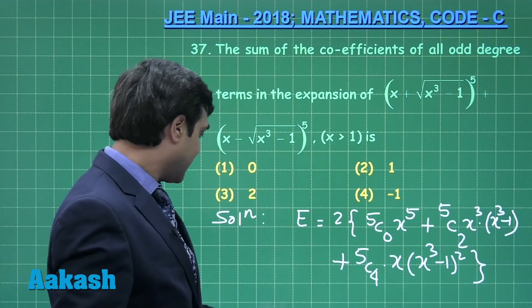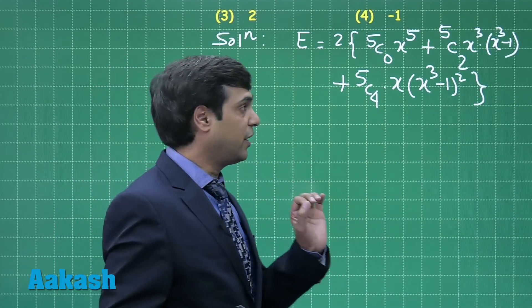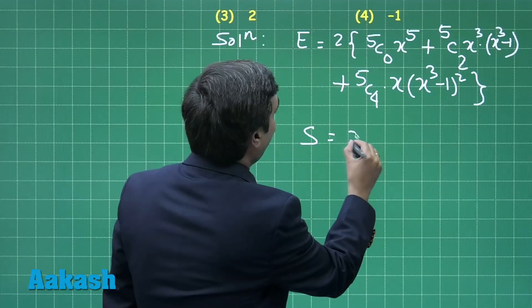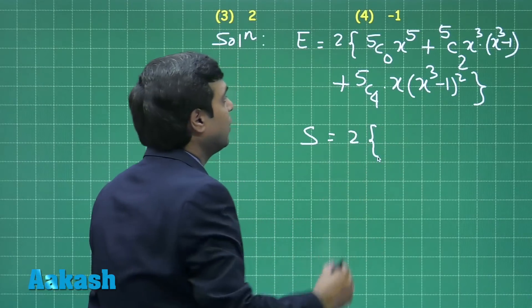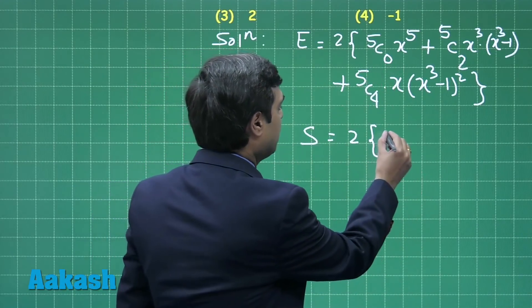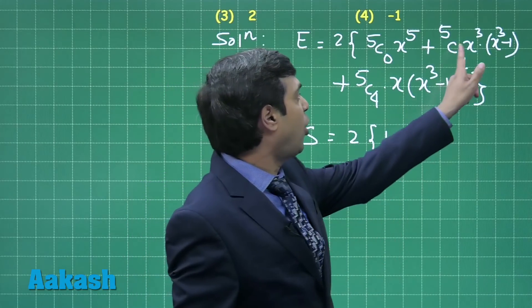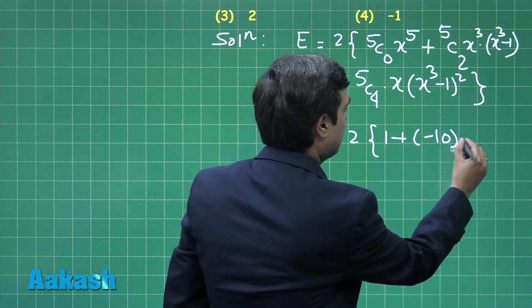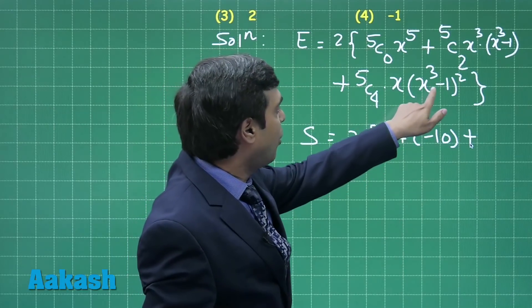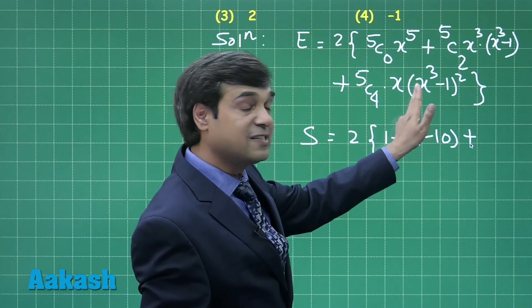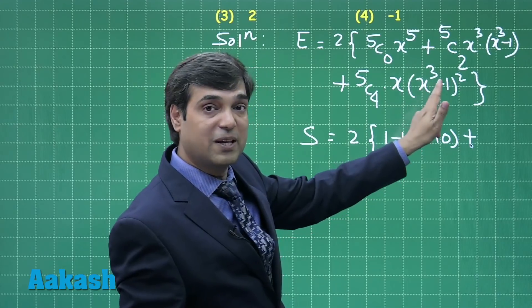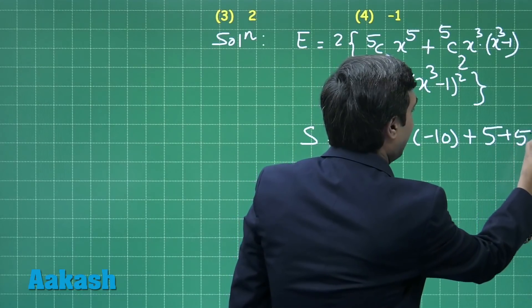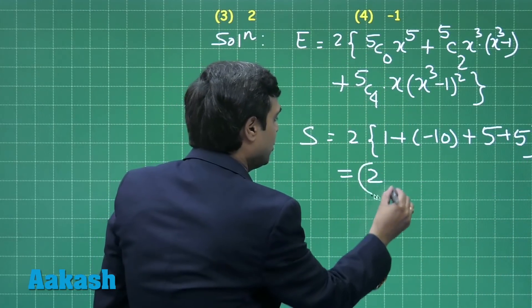Now simplifying, expanding it, we can see the sum of required term, that is the odd coefficients, required result is simply twice of odd powers. The coefficient this is 1, plus next odd will be obtained from this one which is minus 10, plus from here we can see on expanding whole square we will be getting x⁶ minus twice of x³ plus 1 multiplied with x. So we can see here 5 plus 5 as the term. Hence the result is simply 2.